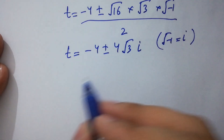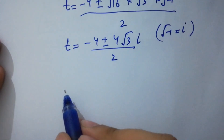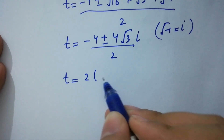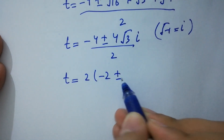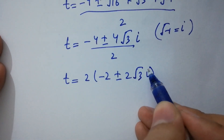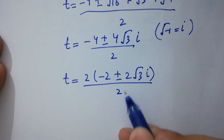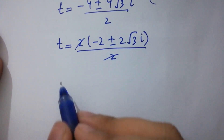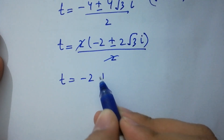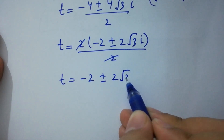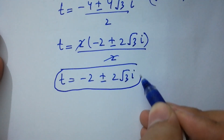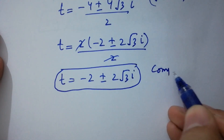So we have t equals minus 4 plus or minus 4 square root of 3i, over 2. The 2 can be factored: we get 2 times the quantity minus 2 plus or minus 2 square root of 3i, divided by 2. The 2s cancel, giving us t equals minus 2 plus or minus 2 square root of 3i, which are the complex solutions.